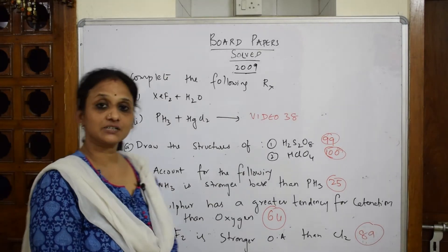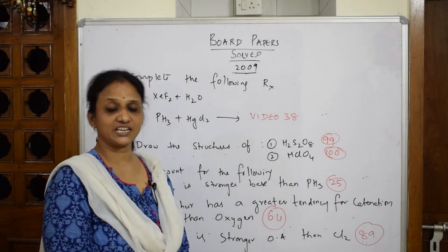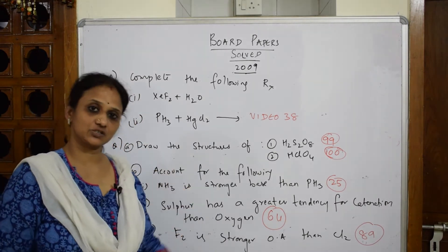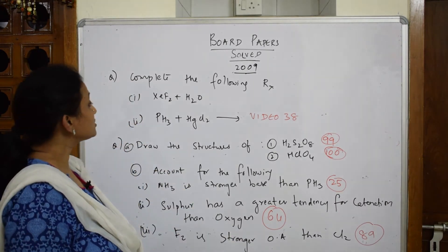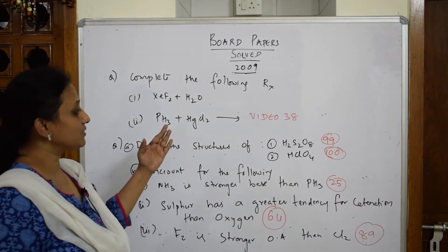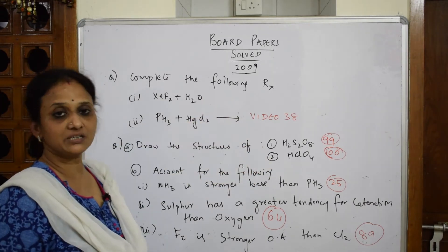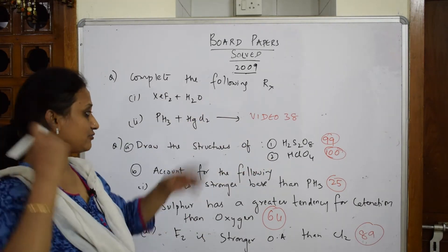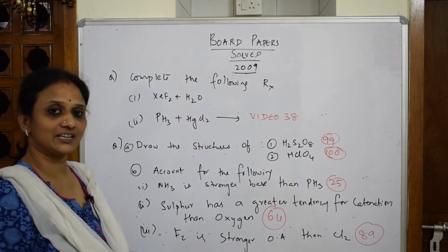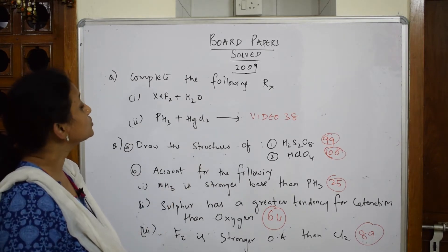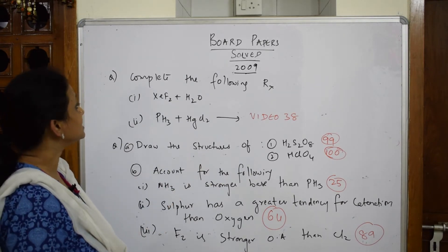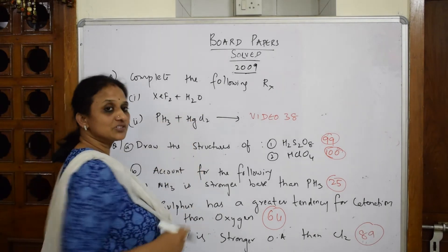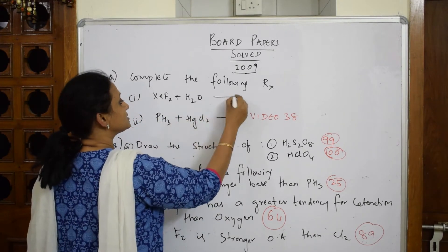Let us come back and start with the 2009 paper. In the 2009 paper they've given two patients again as a choice question. They've given structures as well as 'complete the following' and there's a reason — they've combined them all together. It's a very nice, interesting paper. In the 2009 paper they've asked: complete the following reaction. So I'll do the hydrolysis of xenon here.